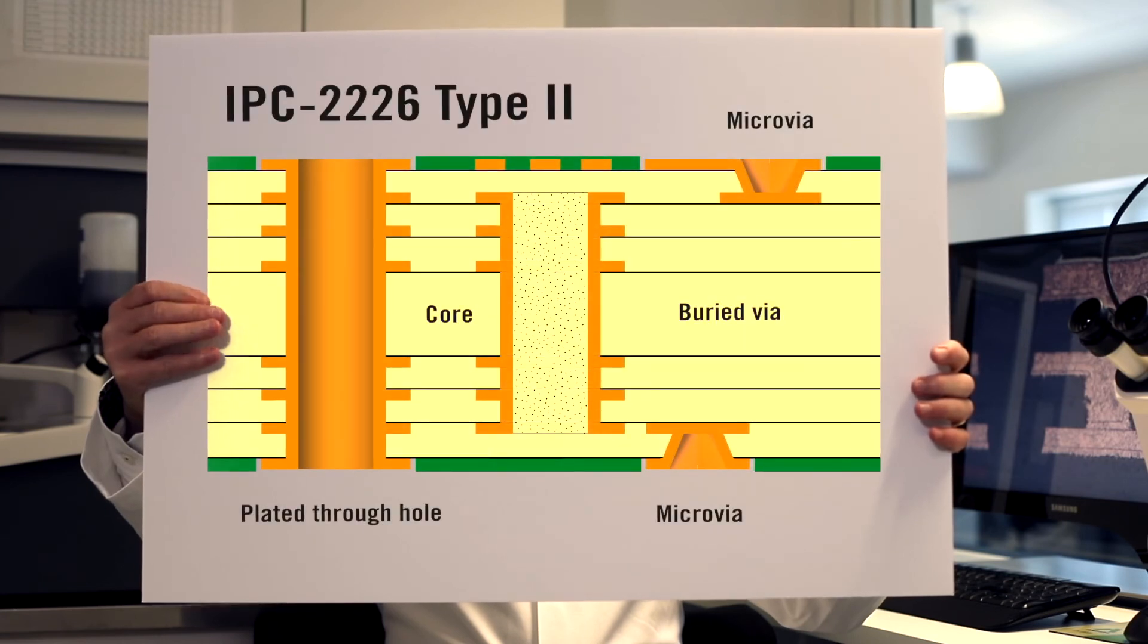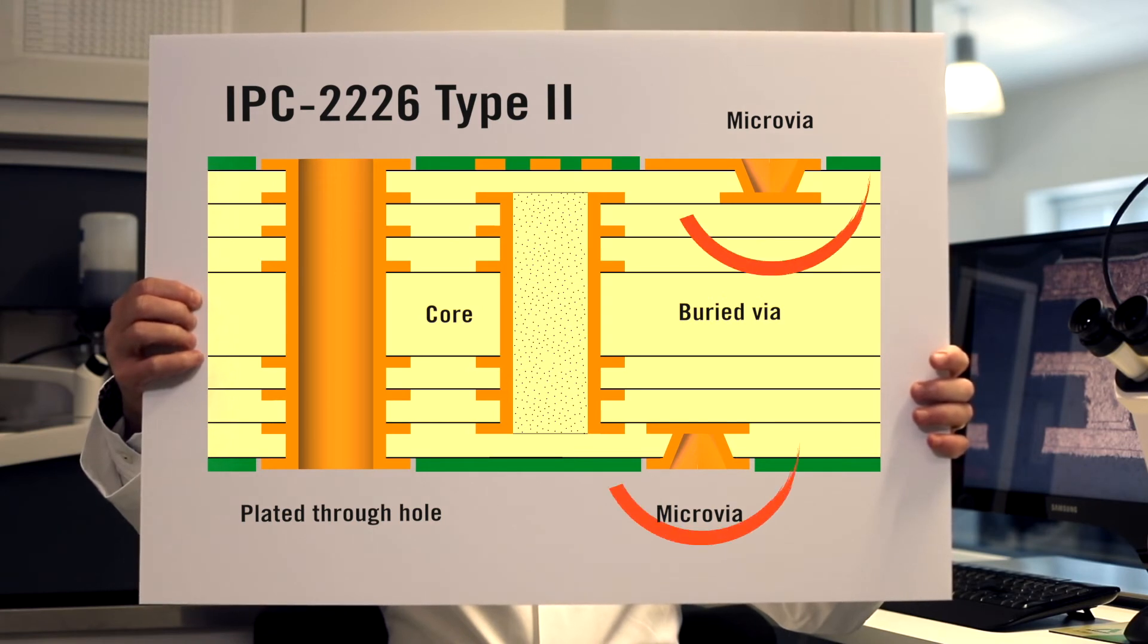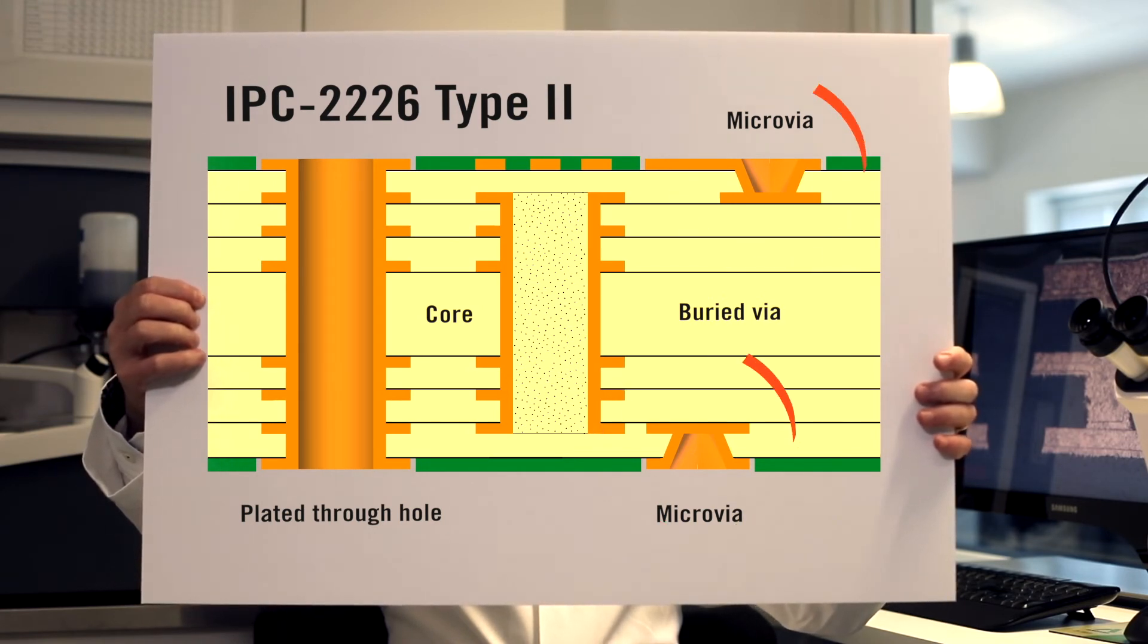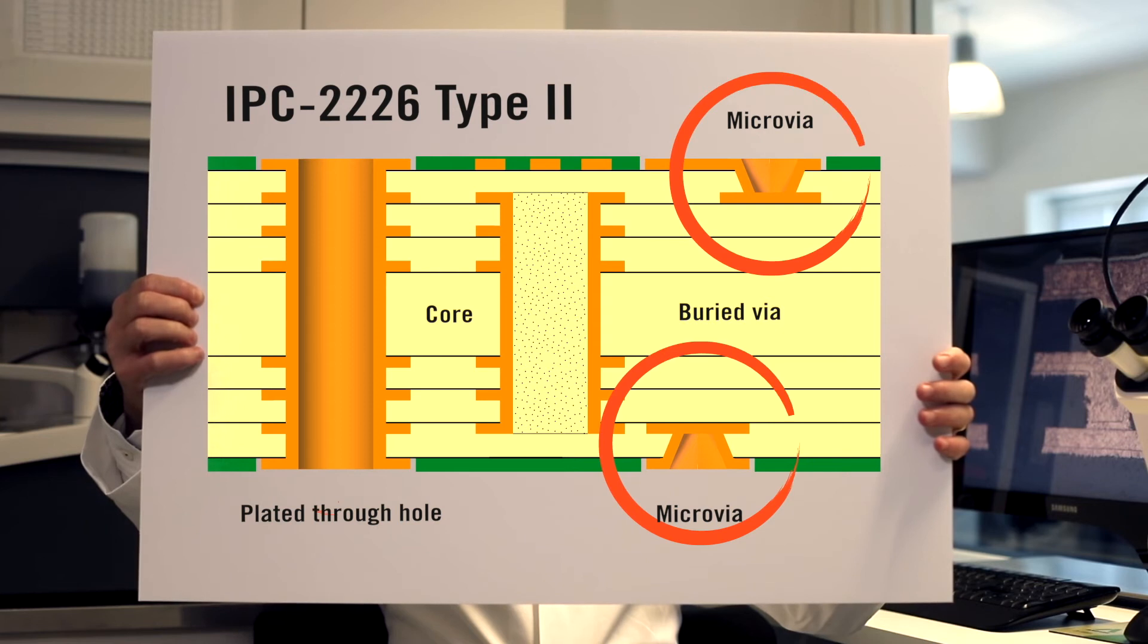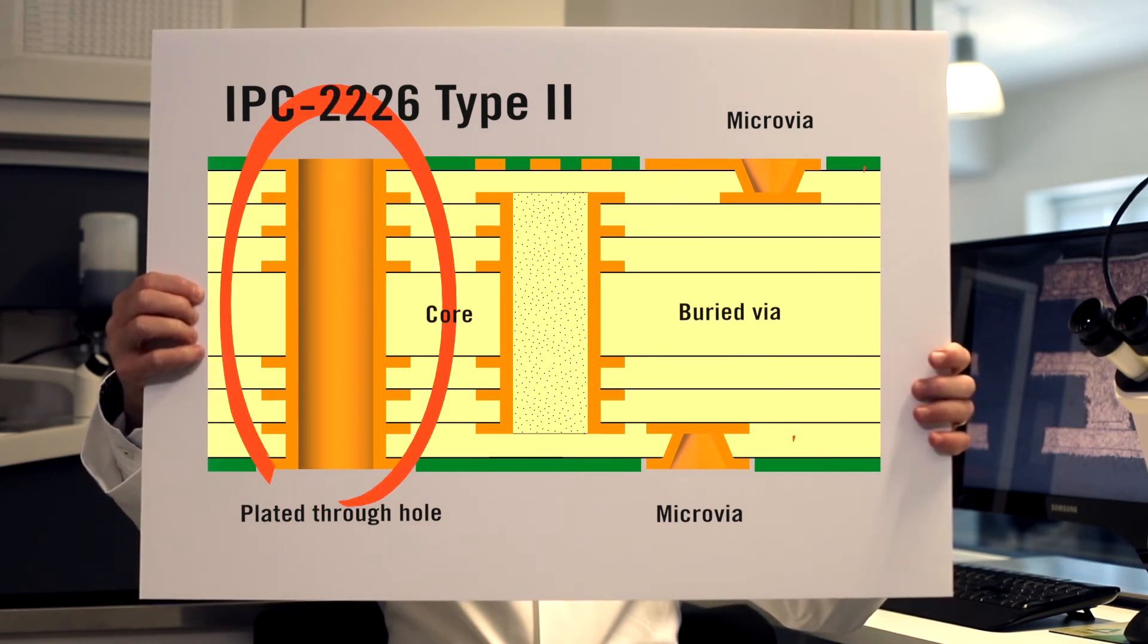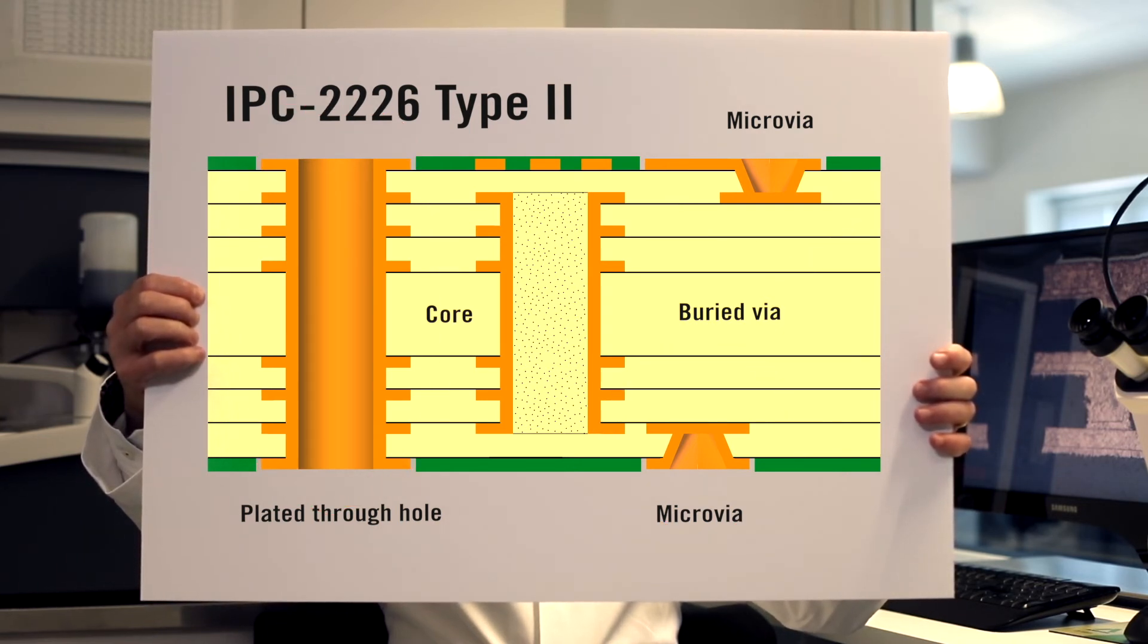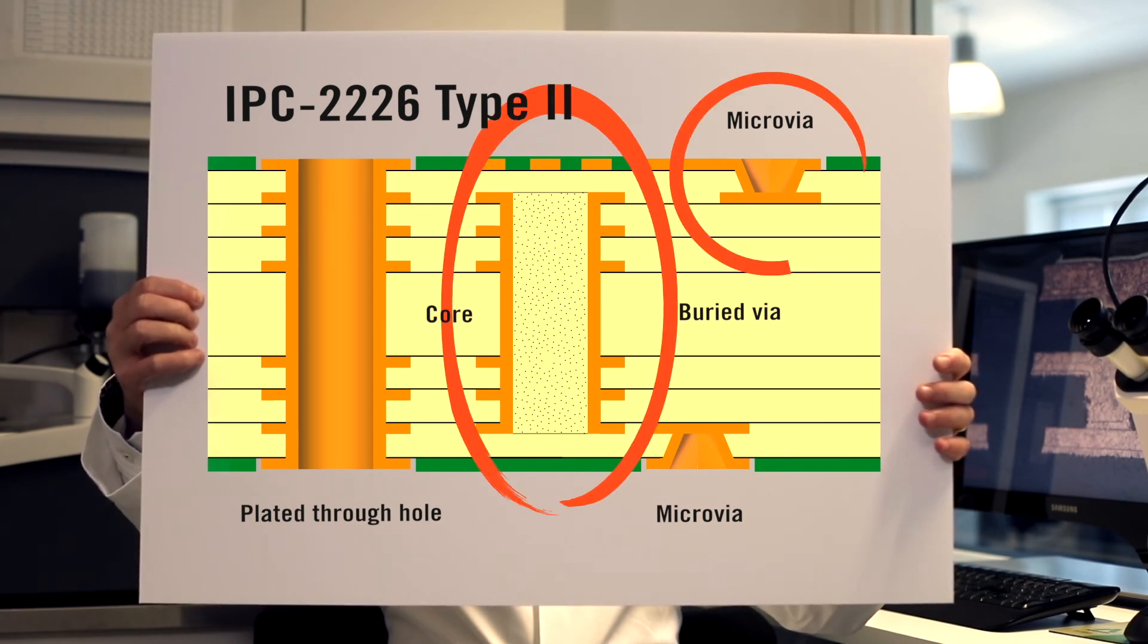Type 2 structures are similar to Type 1 in that they contain just a single microvia layer on either one or both sides of the core. It uses both plated microvia and PTH for interconnection. Yet unlike Type 1, these structures employ both blind and buried via holes.